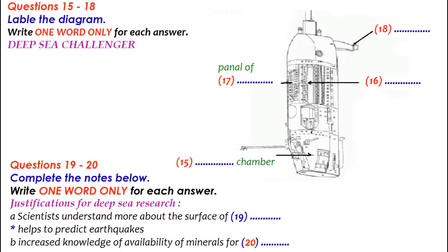Let's move on now to look at the submarine that took James Cameron so far down into the ocean. If you look at the drawing of the Challenger, you can see the pilot's chamber at the very bottom of the submarine. It's a very small section, where the pilot sits and controls the sub and all the equipment on it. Going up from the pilot's chamber, in the middle of the sub, on the right-hand side of the drawing, you can see a whole section covered in batteries. They provide the power source that takes the sub all the way to the bottom of the ocean and back up to the surface again.